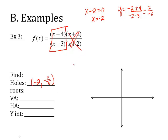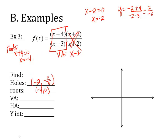Now I take out the x plus 2 part and look at what's left. Roots — take what's left on top, set it equal to 0, solve it, and I get negative 4. Vertical asymptotes — take what's left on the bottom, set it equal to 0, solve it. Horizontal: x is the first power, x is the first power, so this is another Eats DC. Dividing coefficients, I get y equals 1.